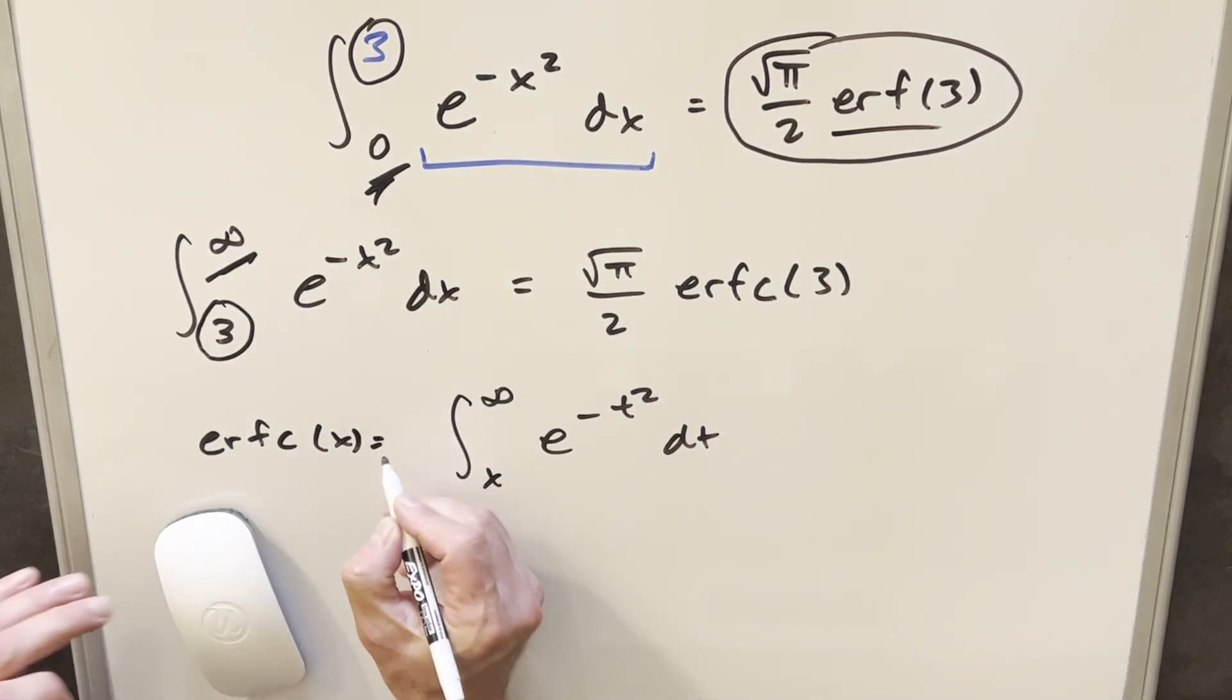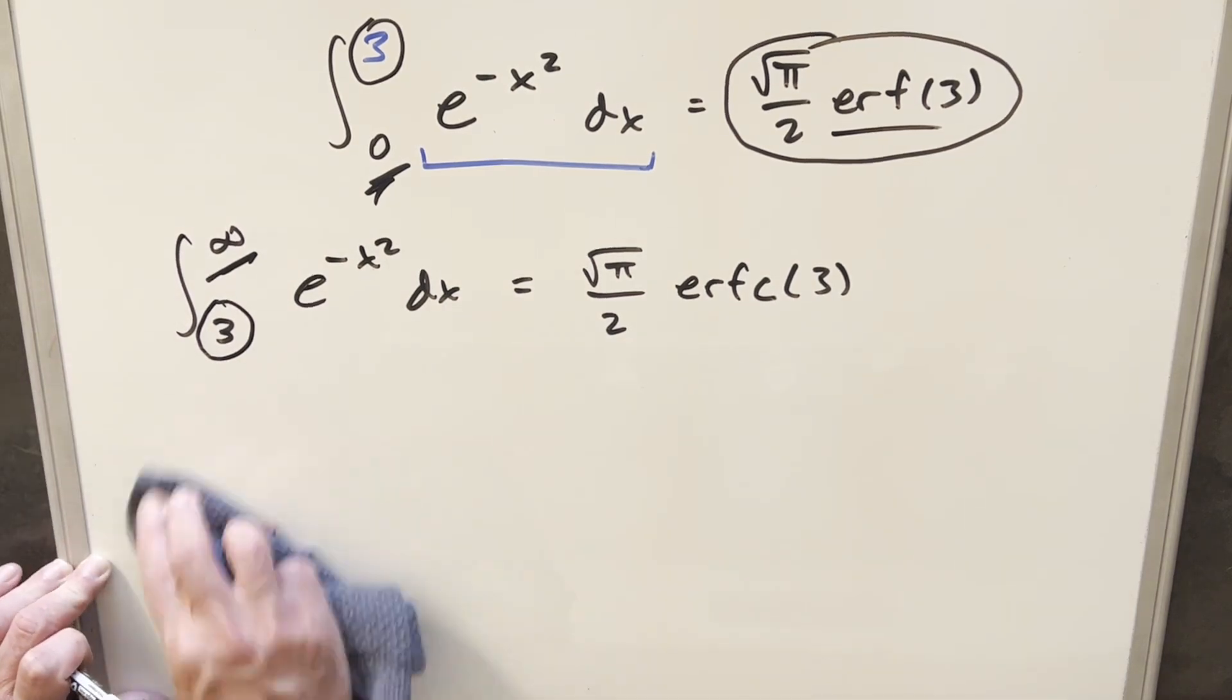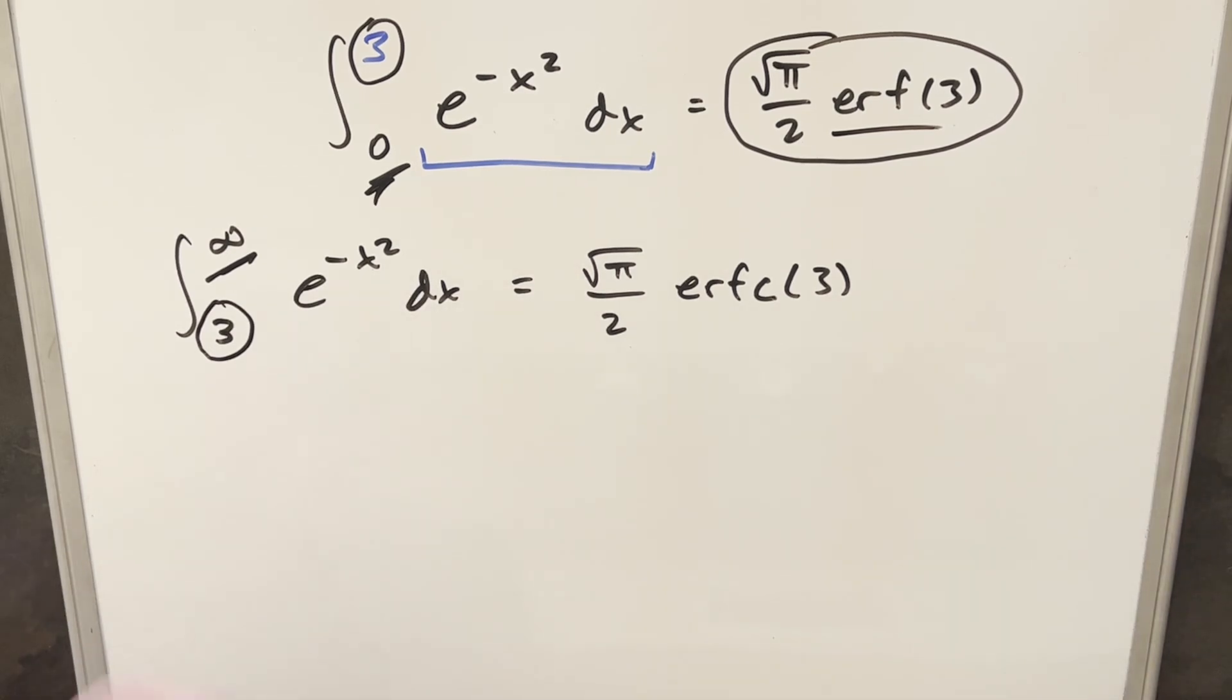But I forgot this part, this 2 over square root of pi here that's going to make this work. Of course here, when x is 3, you get back this exact problem. And so I think one thing that we can do with this is if we actually add these two together, then we're going to know exactly what happens.